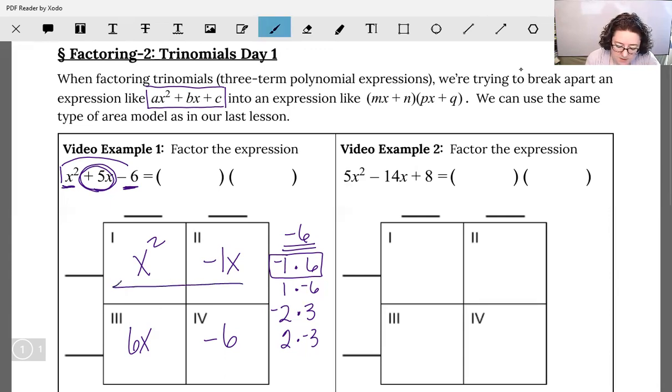Well, what's in common between those two terms? The only thing they both have is an x. So that's my GCF just for those two terms. Do the same thing on the bottom row. 6x and negative 6. Well, both of them have a 6. So there's my GCF.